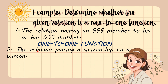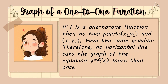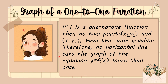Number two is an example of a not one-to-one function. Now let's identify the graph of a one-to-one function. If f is a one-to-one function, then no two points share the same y value. Therefore, no horizontal line cuts the graph of y = f(x) more than once — the horizontal line must hit the graph only once for it to be called a one-to-one function.